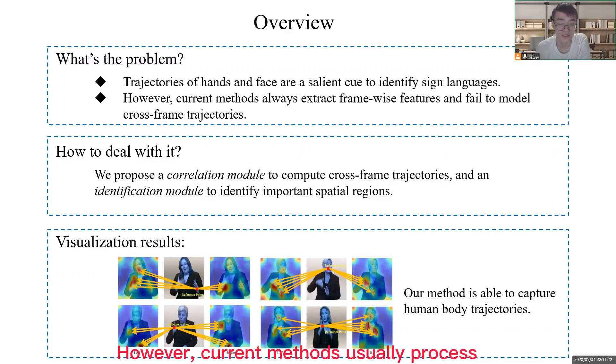However, current methods usually process each frame independently and fail to capture cross-frame trajectories to understand signs. To handle these limitations, we propose a correlation model to compute cross-frame trajectories.